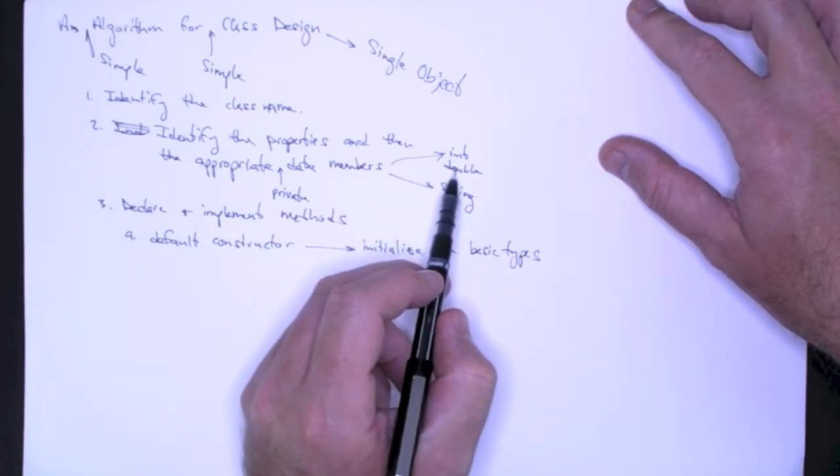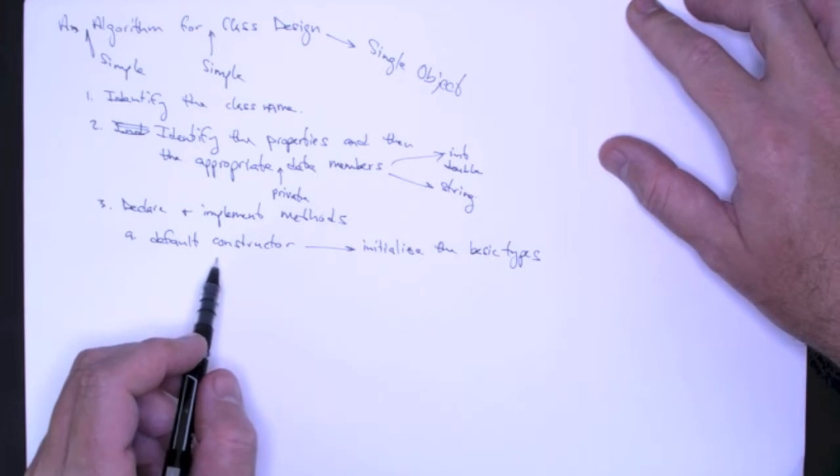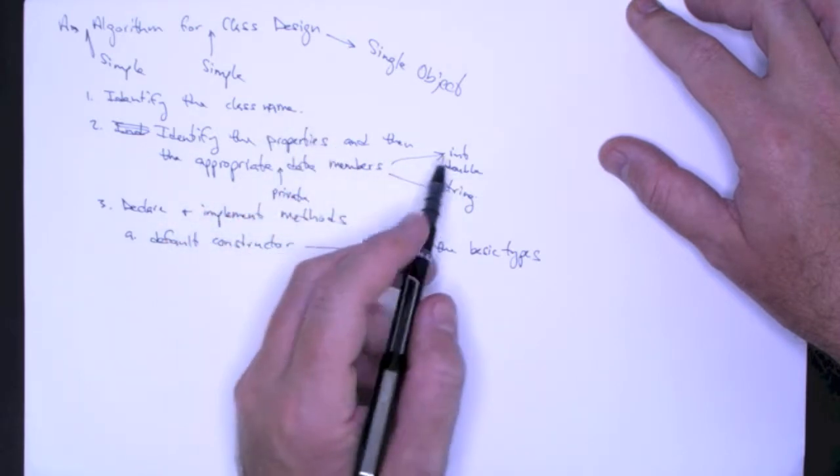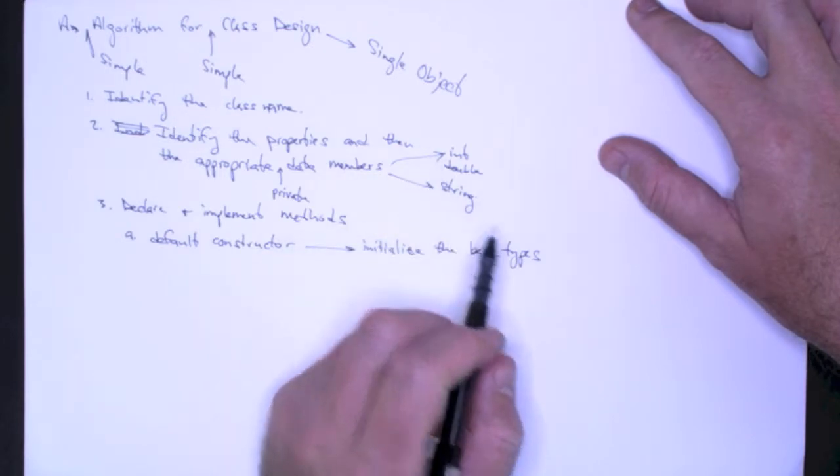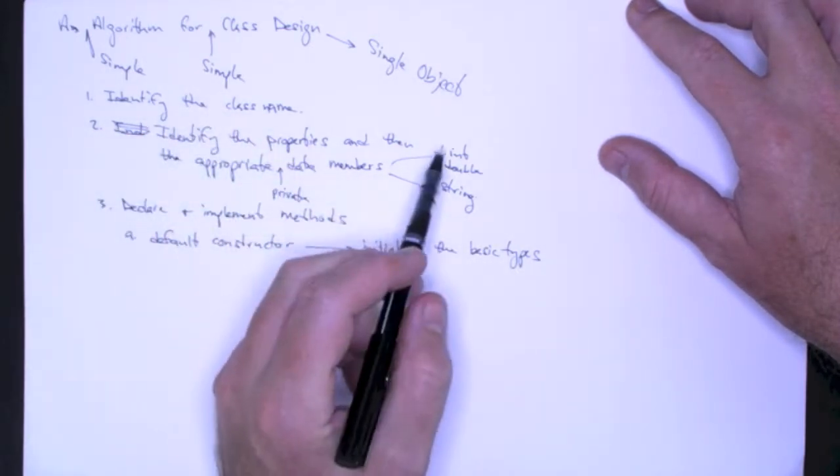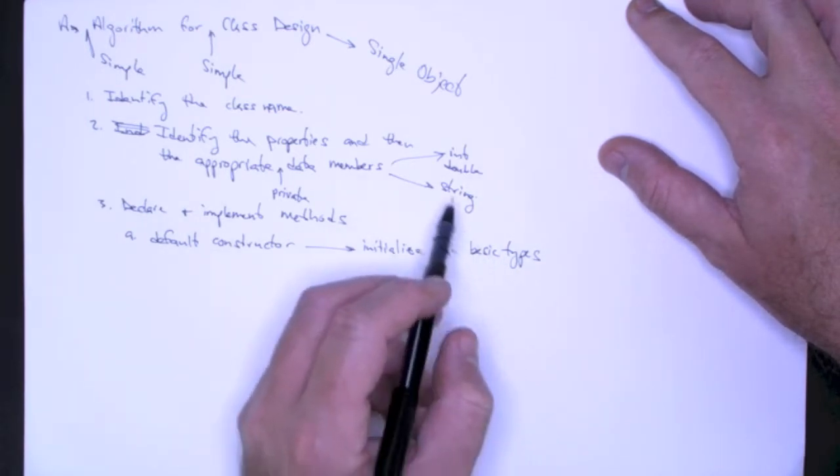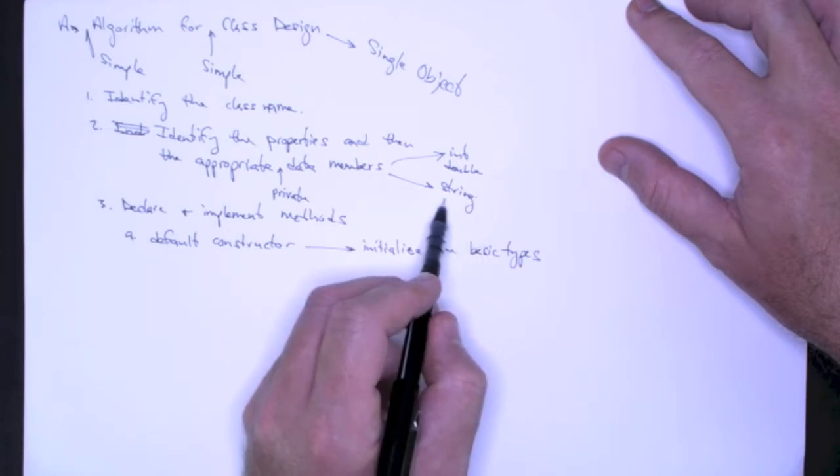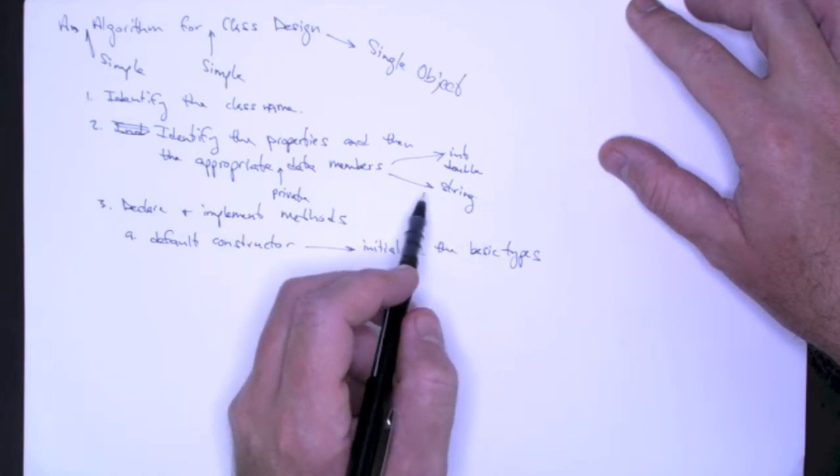It really must initialize the primitive types or the basic types. So if you're using an integer or a double, when your object is constructed, those data members have unassigned values. And so it's critically important that for integer, double, character, and Boolean, and when we get to pointers, pointers, that your default constructor initialize those basic types. It's less important for the string and for class objects because these class objects have a default constructor.